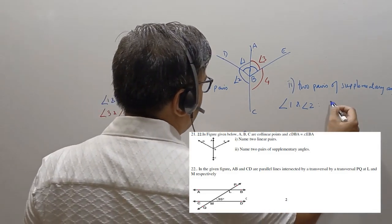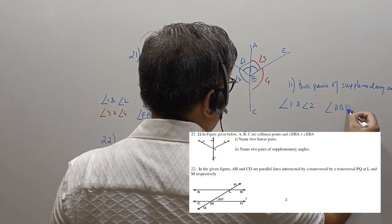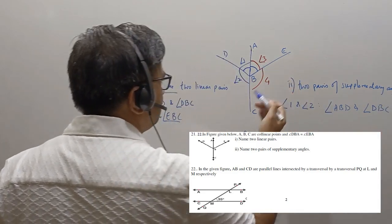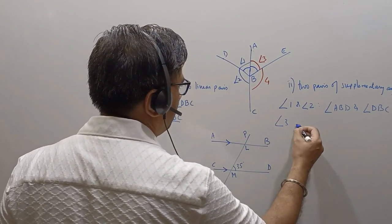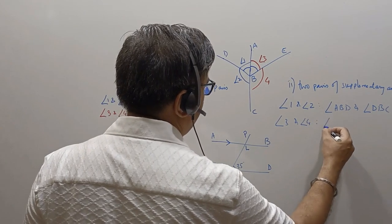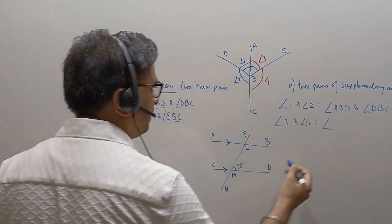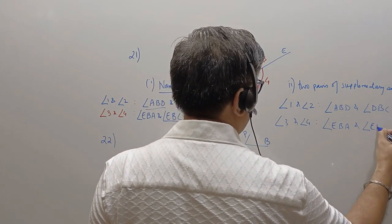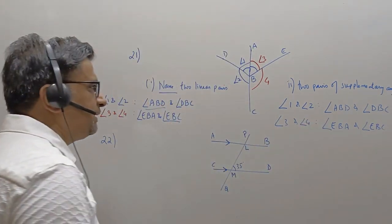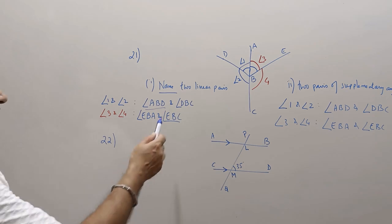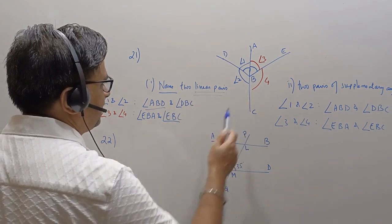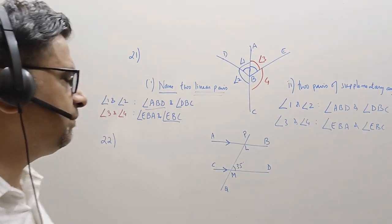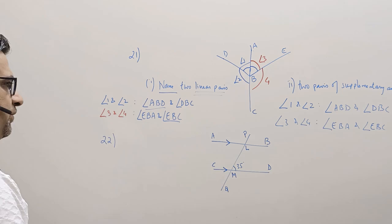So same answer: angle ABD and angle DBC. Angles 3 and 4 form another pair of supplementary angles: angle EBA and angle EBC. Both have the same answer. Obviously, if they are linear pairs, they are supplementary as well. We can have these same pairs as the supplementary angle pair.